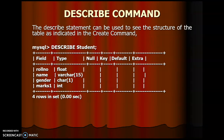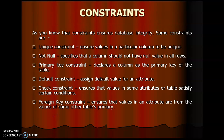The DESCRIBE command is used to show the table structure of a table as indicated in the CREATE command. Constraints means conditions — we can apply some constraints at the table or column level. These include: UNIQUE constraint, NOT NULL constraint, PRIMARY KEY constraint, DEFAULT constraint, CHECK constraint, and FOREIGN KEY constraint.